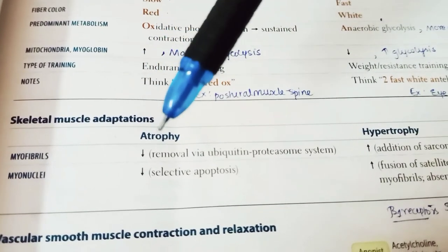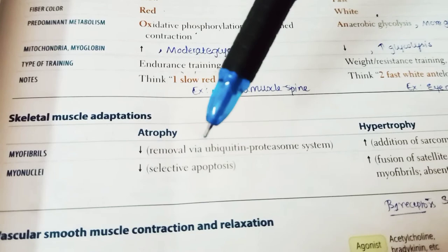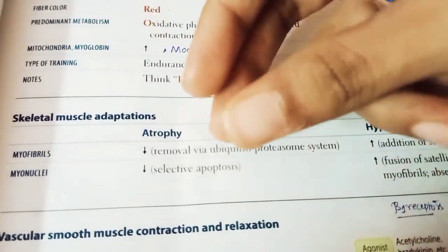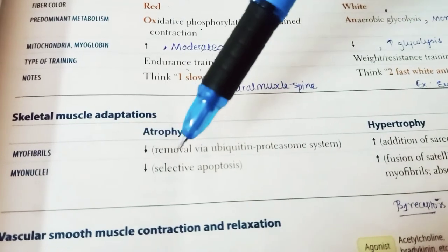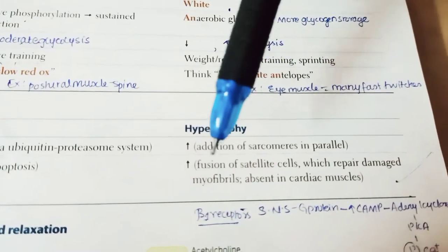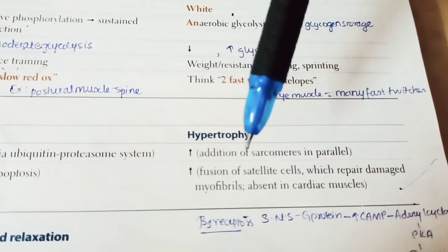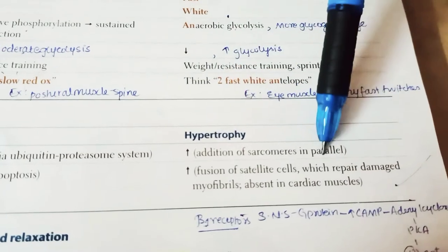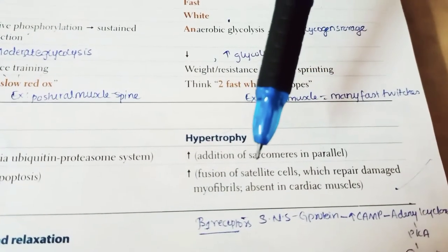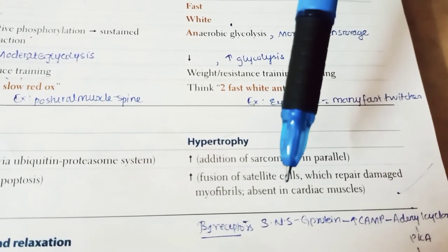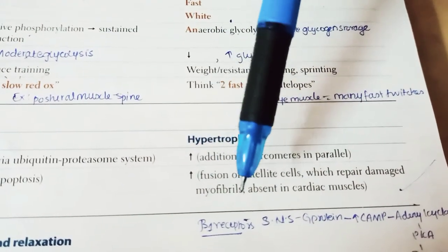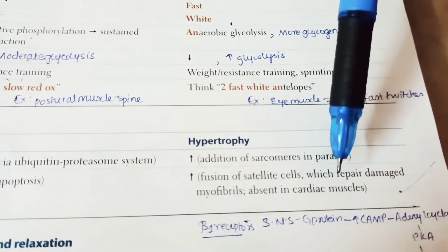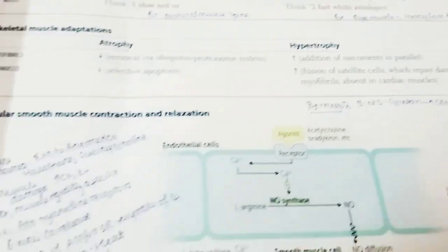Muscle atrophy means myofibrils decrease due to removal via the ubiquitin-proteasome system, and myonuclei also decrease due to selective apoptosis. Hypertrophy means myofibrils increase by addition of sarcomeres in parallel (important: hypertrophy = in parallel). Myonuclei increase by fusion of satellite cells, which repair damaged myofibrils — this mechanism is absent in cardiac muscle.